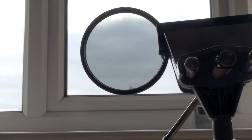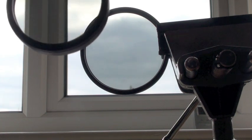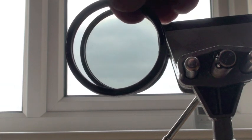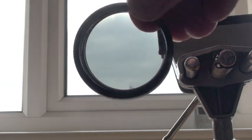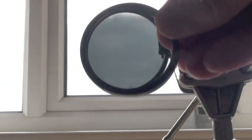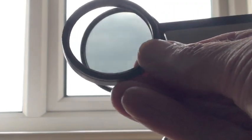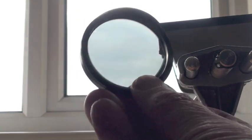The classic demonstration of the function of Polaroid filters is to place one in front of the other, in front of a bright light, then gradually turn the second. As you turn it, the light darkens and goes almost black. Turn it further and it lightens again.